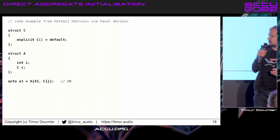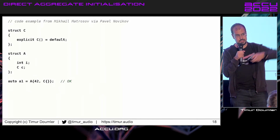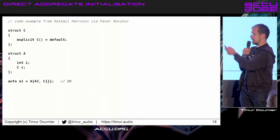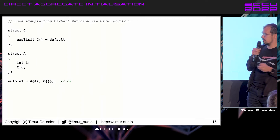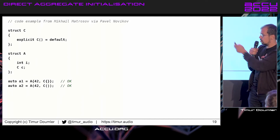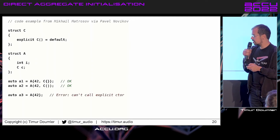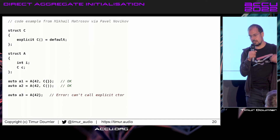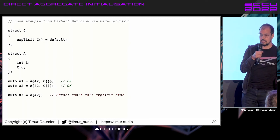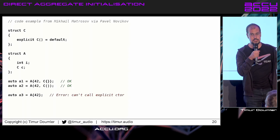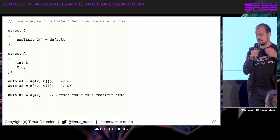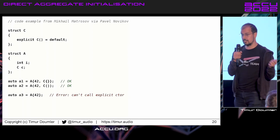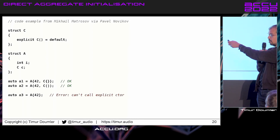And here's my favorite — this is really cool. We have a struct A with two members, and the second member is another struct C which has an explicit constructor. Now we're initializing the aggregate with parens, just default initializing the C — that works, it also works when you use parens. It gets weird when we don't explicitly initialize the C, because if you don't explicitly initialize an aggregate member, the standard says it's going to be initialized as if by copy list initialization from an empty brace-init-list. Copy list initialization is a form of copy initialization, and copy initialization doesn't work with explicit constructors, therefore you get a compiler error.